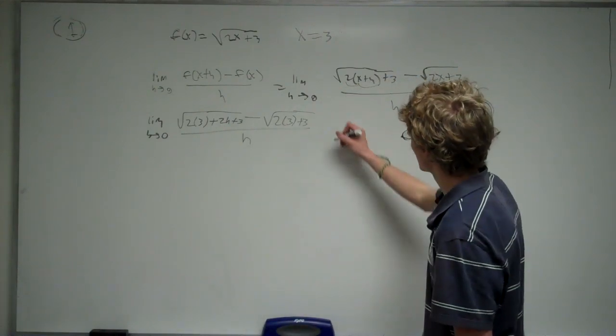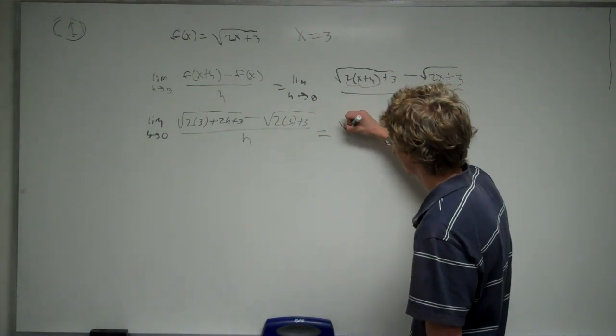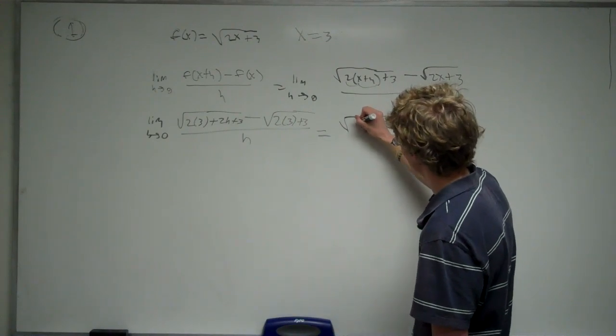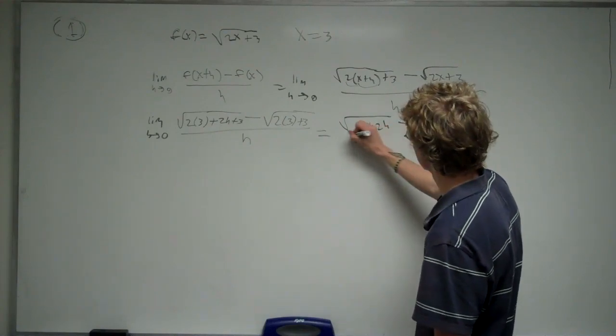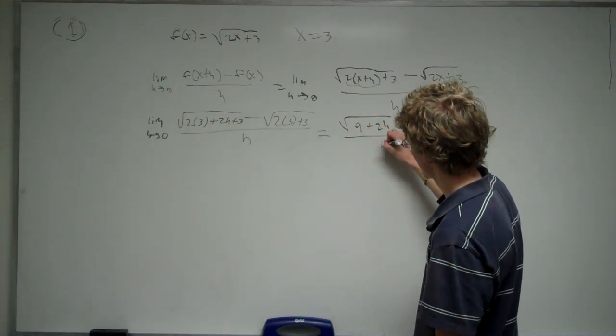Now, when we simplify this out even more, we're going to get the square root of 9 plus 2h minus the square root of 9 all over h.